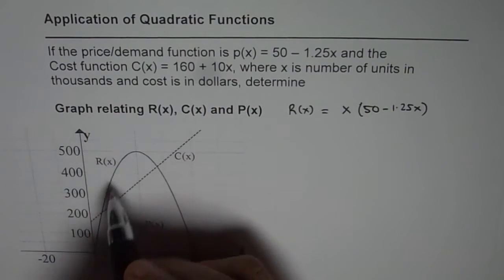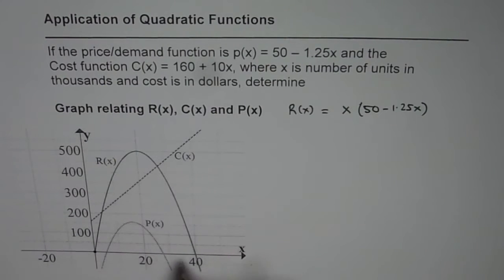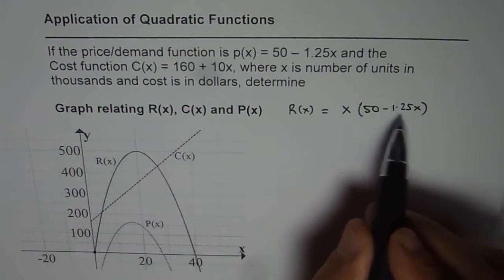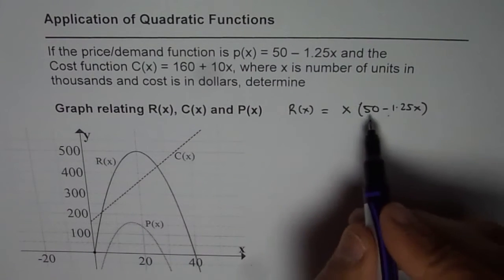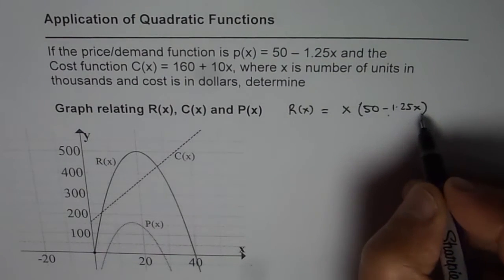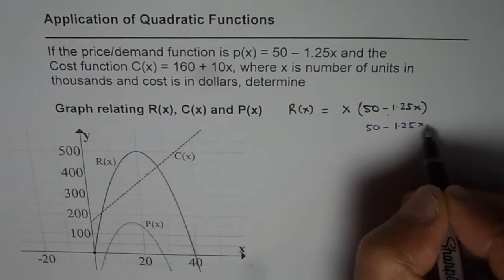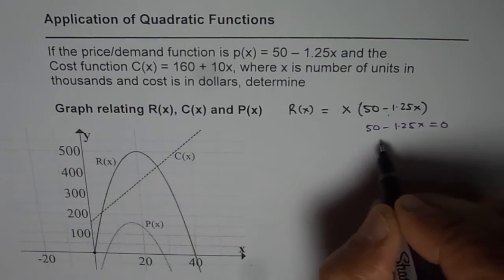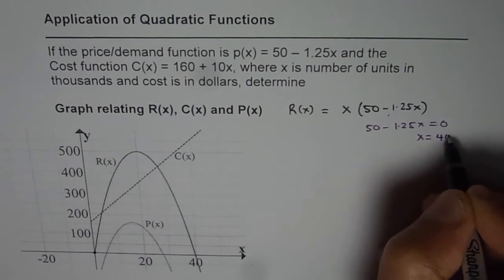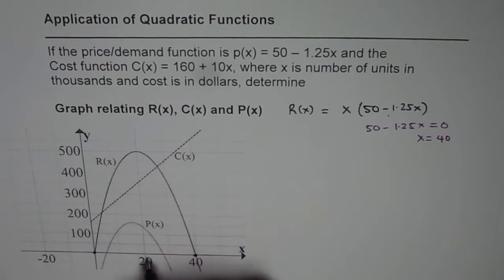The revenue function is shown by this big parabola where two intercepts are one at x = 0 and the other one is at 40, since the other factor 50 - 1.25x is 0 for 40. We can equate this to 0, so 50 - 1.25x = 0 means x equals to 40. Midway between at 20 we get the maximum revenue.